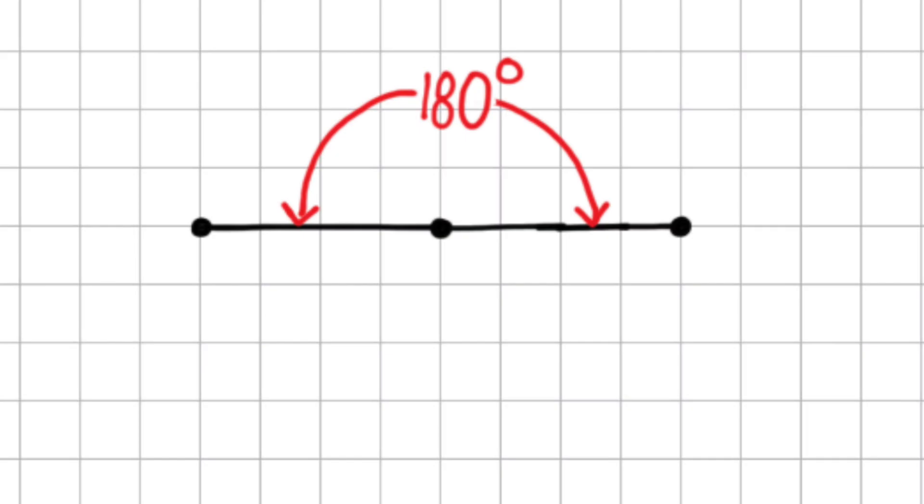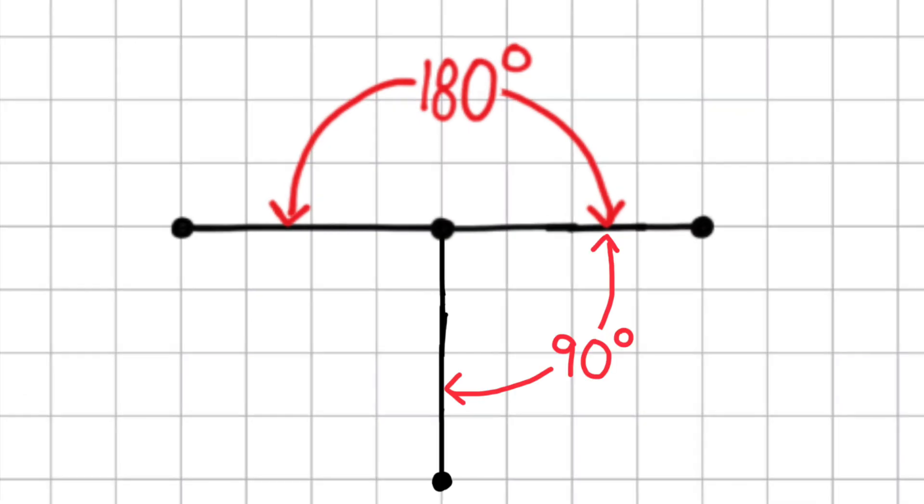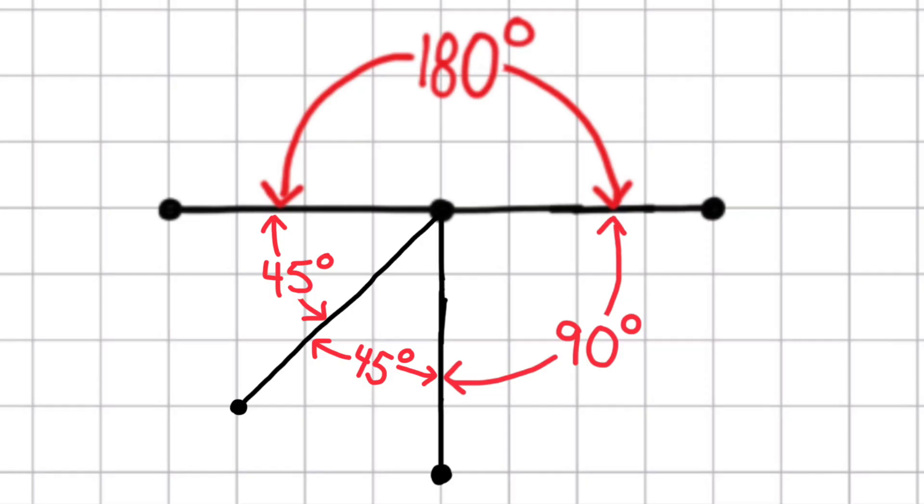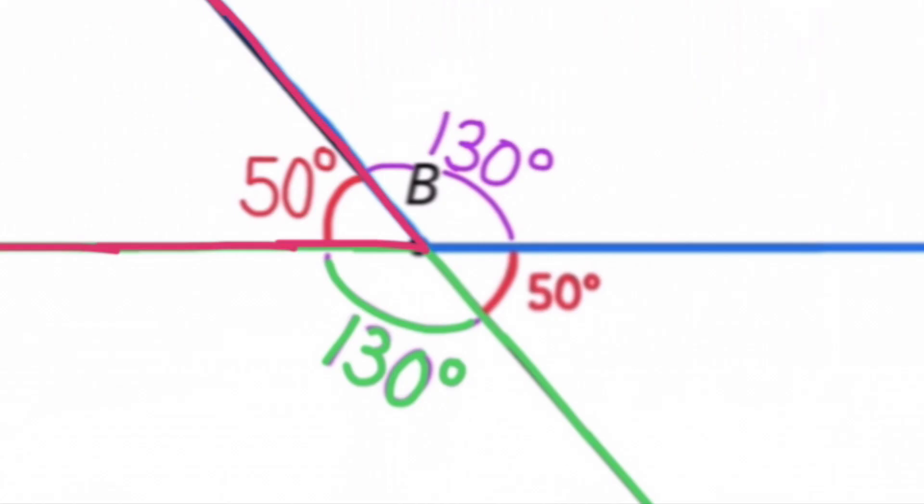Here's another look at 180 degrees. This angle measures 90 degrees. So another 90 degree angle would total 180 degrees. 90 degrees plus 45 degrees plus another 45 degrees also equals 180 degrees.